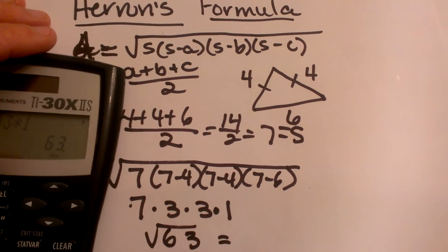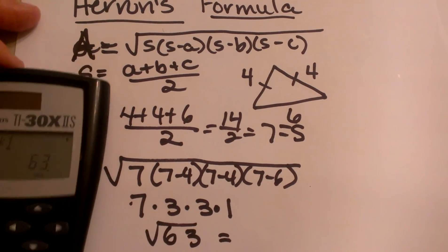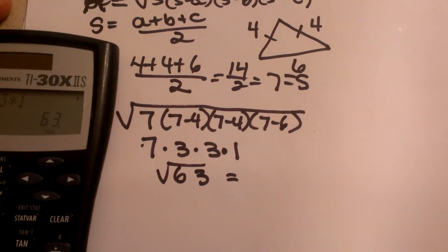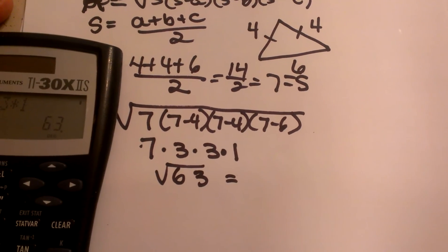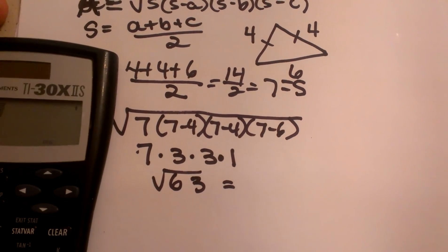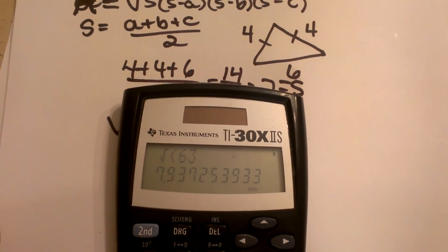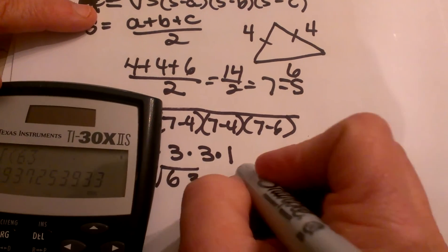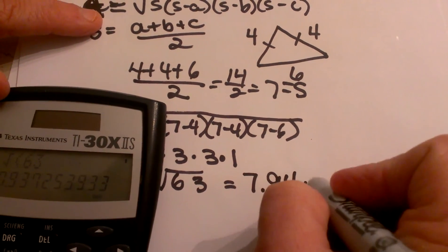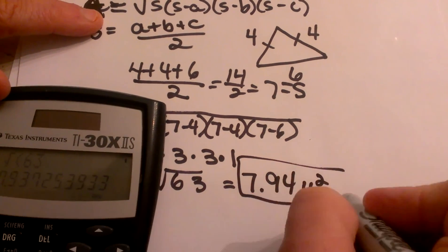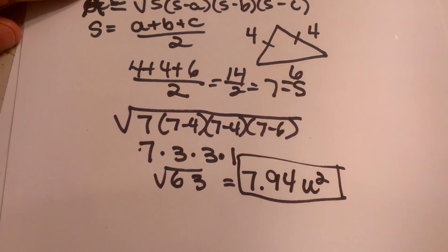We know the square root of 64 is 8, so it's actually very close to the value of 8. So let's take the square root of 63, and that gives me 7.94. So 7.94 units squared is the area of that triangle using Heron's formula.